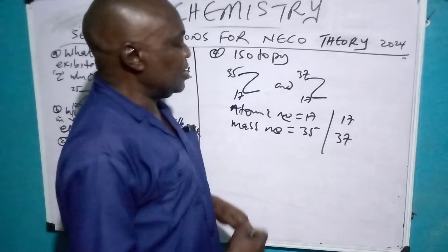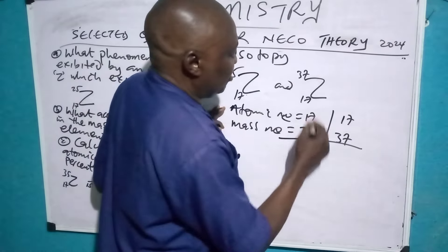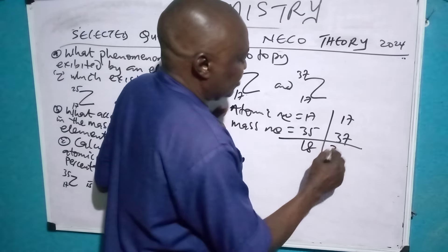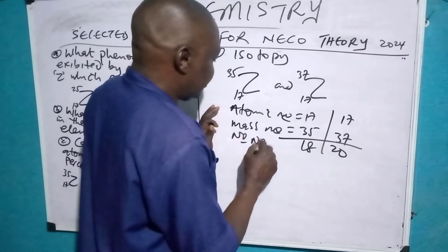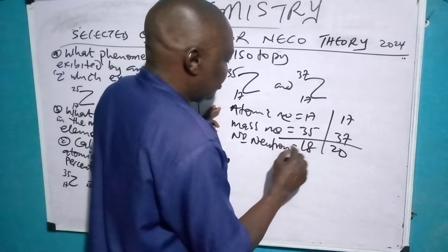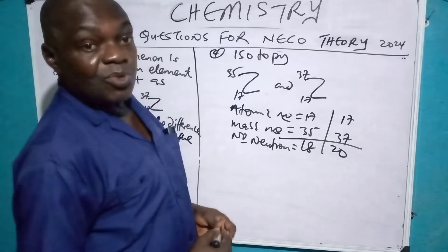If you subtract it, remove this, this one gives 18, this one gives 20. So, number of neutrons, 18 and 20. That is what causes the difference.